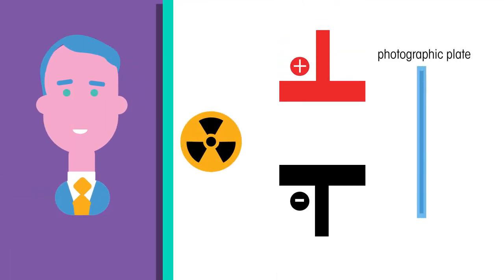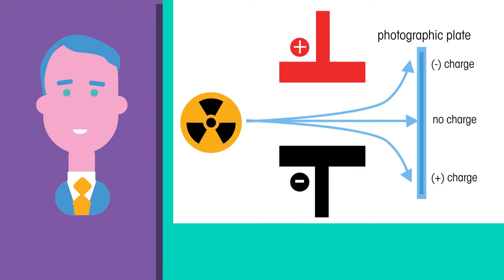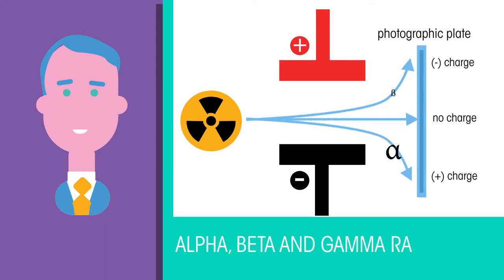Rutherford identified three types of radiation, two of which were deflected in an electric or magnetic field. These were identified and named as alpha, beta and gamma radiation. Here we will look more closely at their properties of penetration of matter.